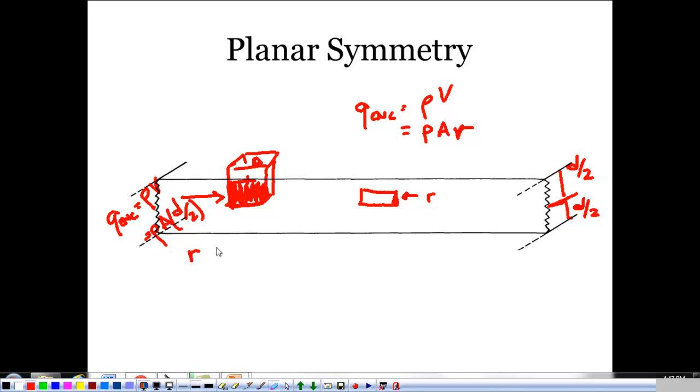So on the inside where R is greater than D over 2, when we're outside of this volume, we're going to have E dot dA is equal to my enclosed charge over epsilon naught, rho times A times D over 2 over epsilon naught. That's the case. It's E A is equal to rho A times D over 2 over epsilon naught. And we have something similar to what we had before with this, which is E is equal to rho times D over 2 epsilon naught.